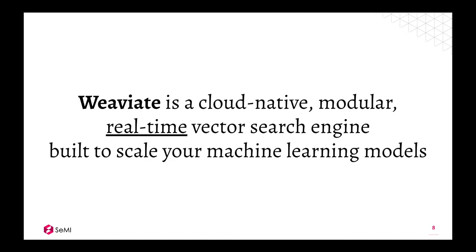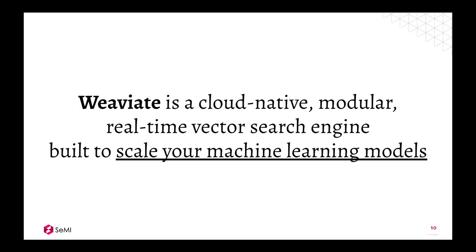We focus on Weaviate being as real-time as possible. We're constantly working on improving the speed of the algorithms to do vector retrievals. It's a vector search engine, so rather than doing keyword matching, we focus on vector matching. It's built to scale your machine learning models — having models is one thing, but using them efficiently and scaling them to production sizes is a completely different question.